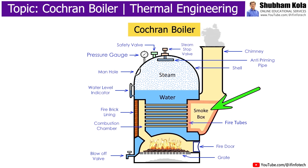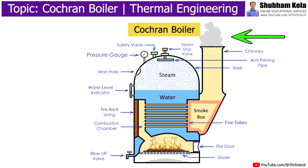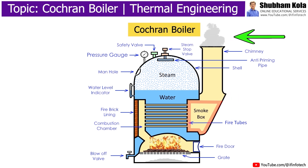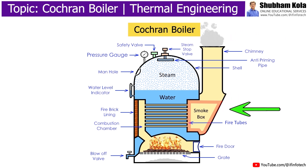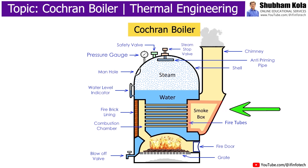The smoke box is used for storing and releasing smoke to the chimney during working of the boiler. It is made up of riveted or welded steel plate and the floor is lined with concrete for protection of steel from rainwater.